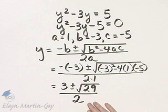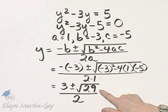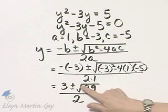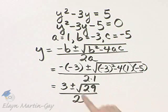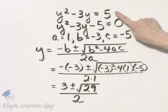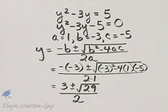Now, is there any simplifying that can be done? The answer is no, because 29 is prime. There's no simplifying with the radical, and here are my two solutions for our original quadratic equation.